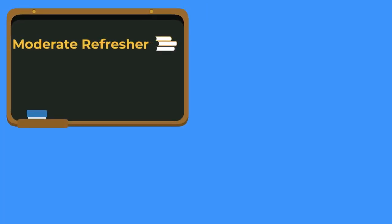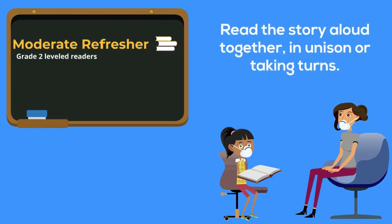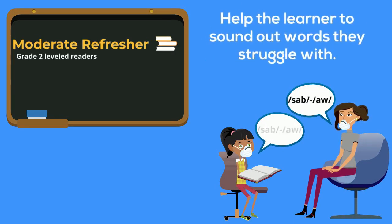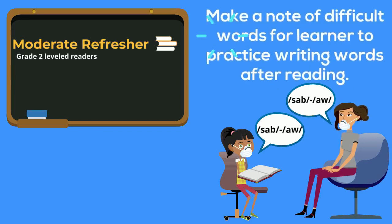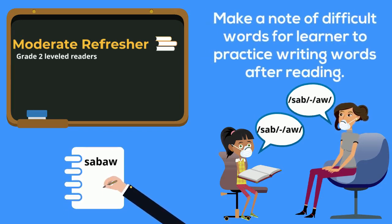Learners in need of a moderate refresher should also use grade 2 leveled readers. Read the story aloud together, either in unison or by taking turns. Help the learner sound out the words they struggle to read and take note of these difficult words. Then ask the learner to practice writing these words after you finish the story.